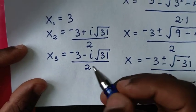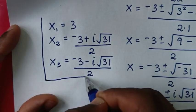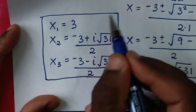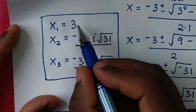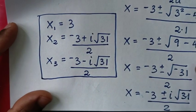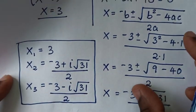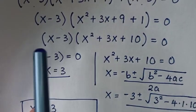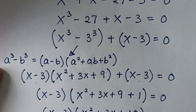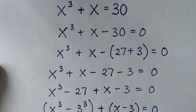So these are all the values of x: we have one real solution x = 3, and two complex solutions x = (-3 ± i√31) / 2. Thank you for watching — subscribe to my channel and see you in the next video, bye bye.